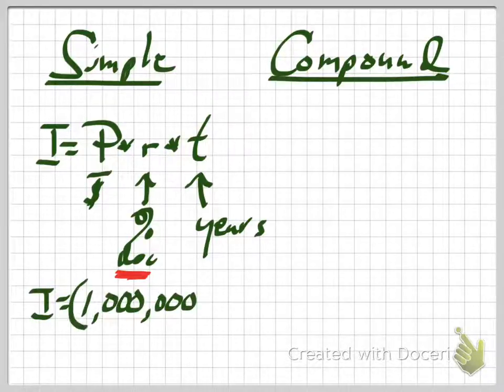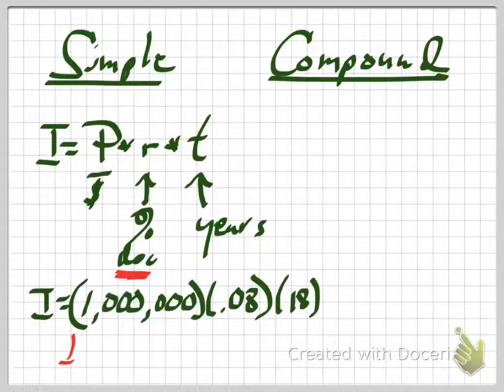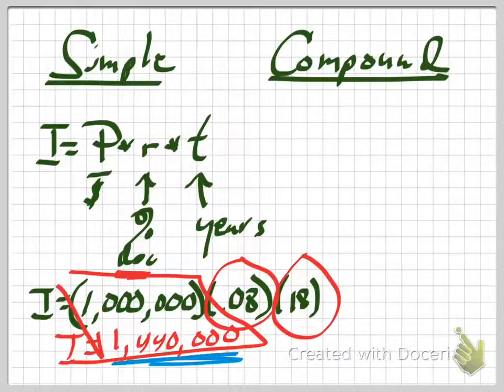If I take an example where I put $1 million at 8% interest for 18 years — let's say this is Mack's college trust fund — some rich relative left him a million dollars in a great investment earning 8%. All I have to do is plug the numbers into a calculator: $1,000,000 × 0.08 × 18. That gives a staggering $1,440,000 in interest — more than the original amount. That's just interest, plus the million dollars already in the bank.